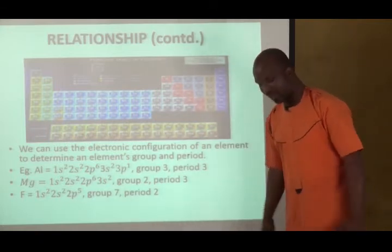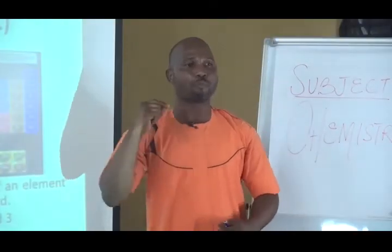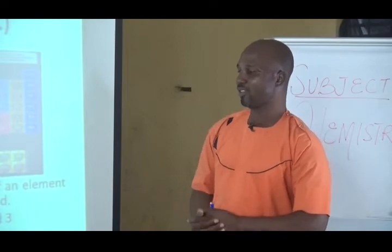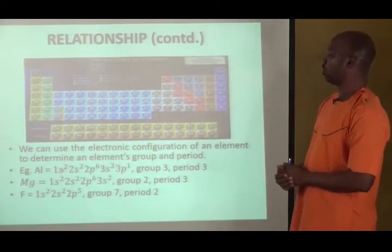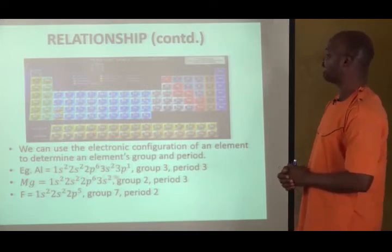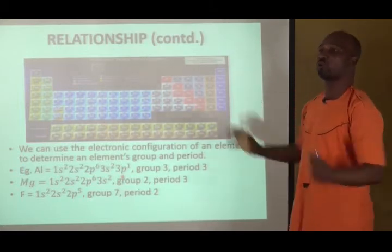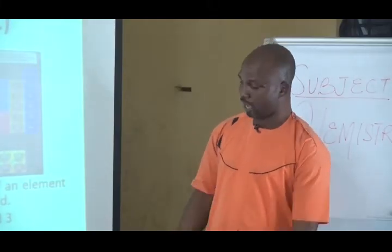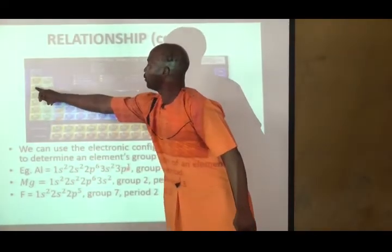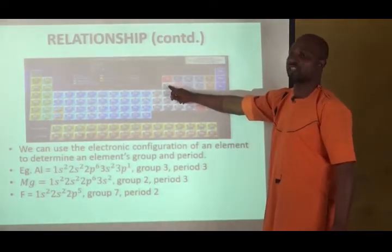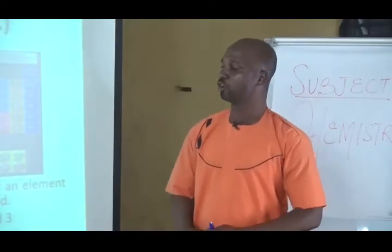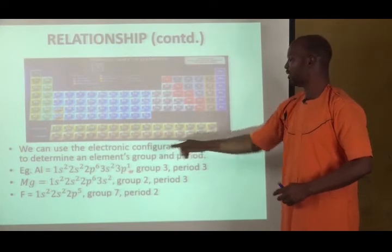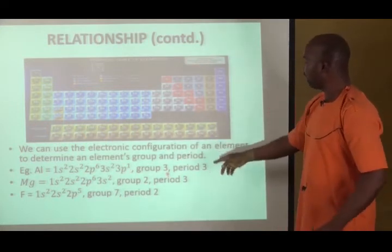In examinations you may be asked to state the group and period an element belongs to. Using electronic configuration, you can determine this. For instance, aluminium has the electronic configuration 1s2, 2s2, 2p6, 3s2, and 3p1. The period is shown by the outermost shell — here it is 3s and 3p, so aluminium is in period 3. The group is based on the number of electrons in the outermost shell: 3s2 plus 3p1 gives 2 + 1 = 3. Therefore aluminium is in group 3, period 3.